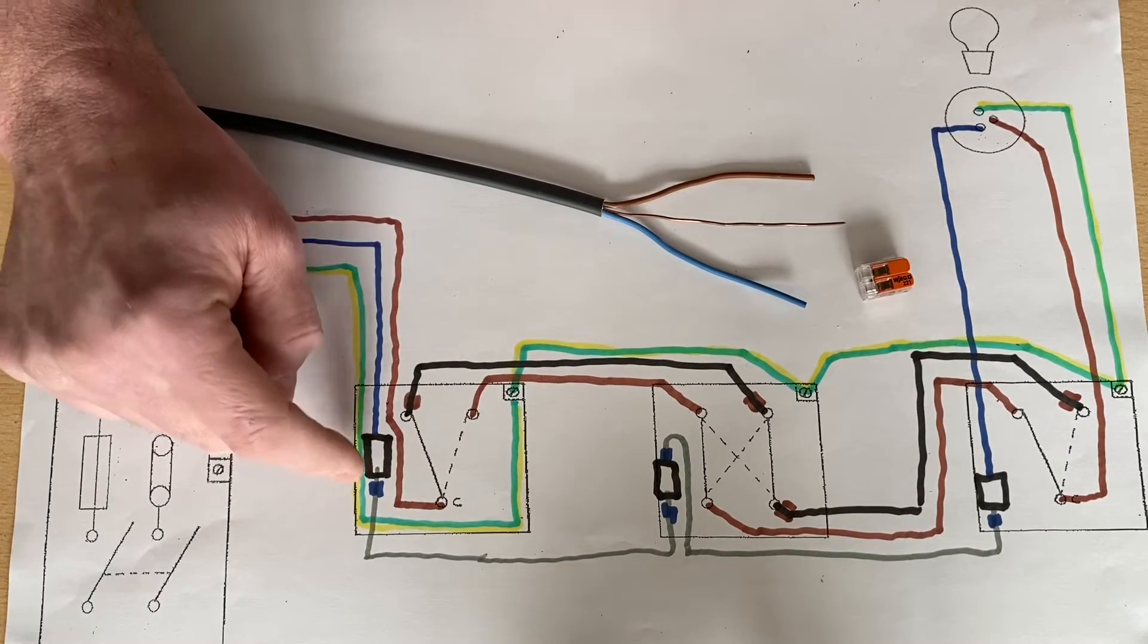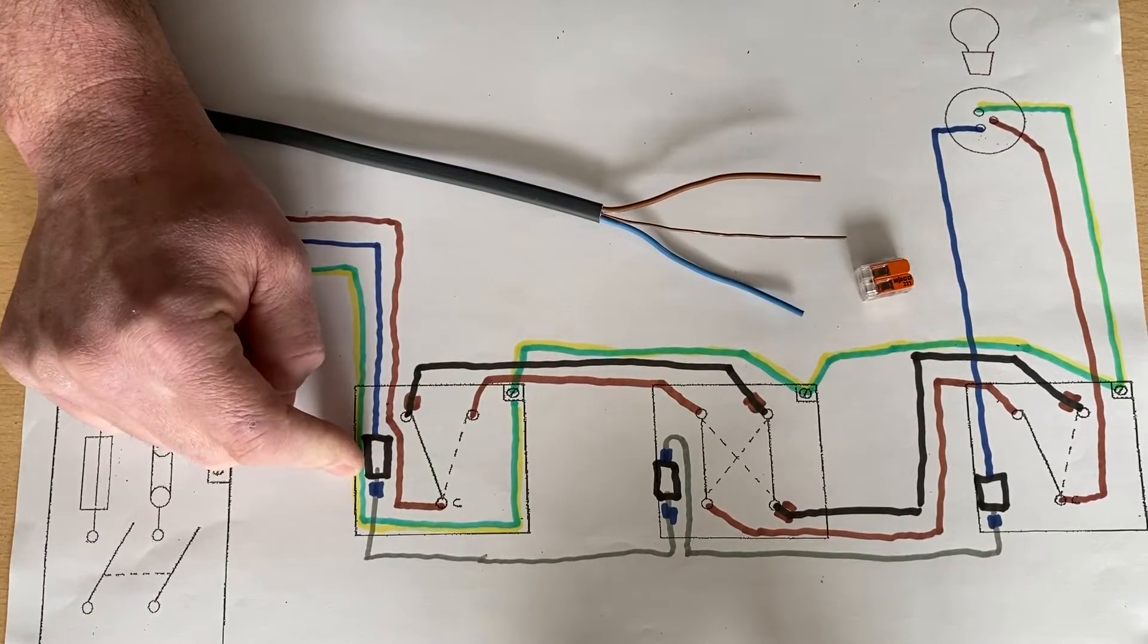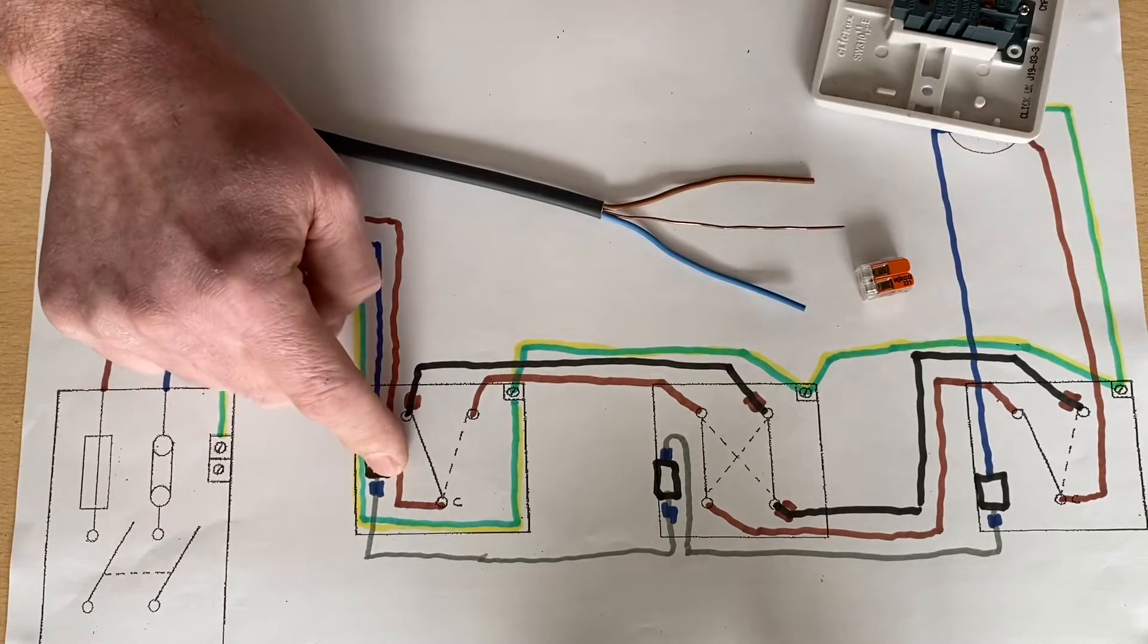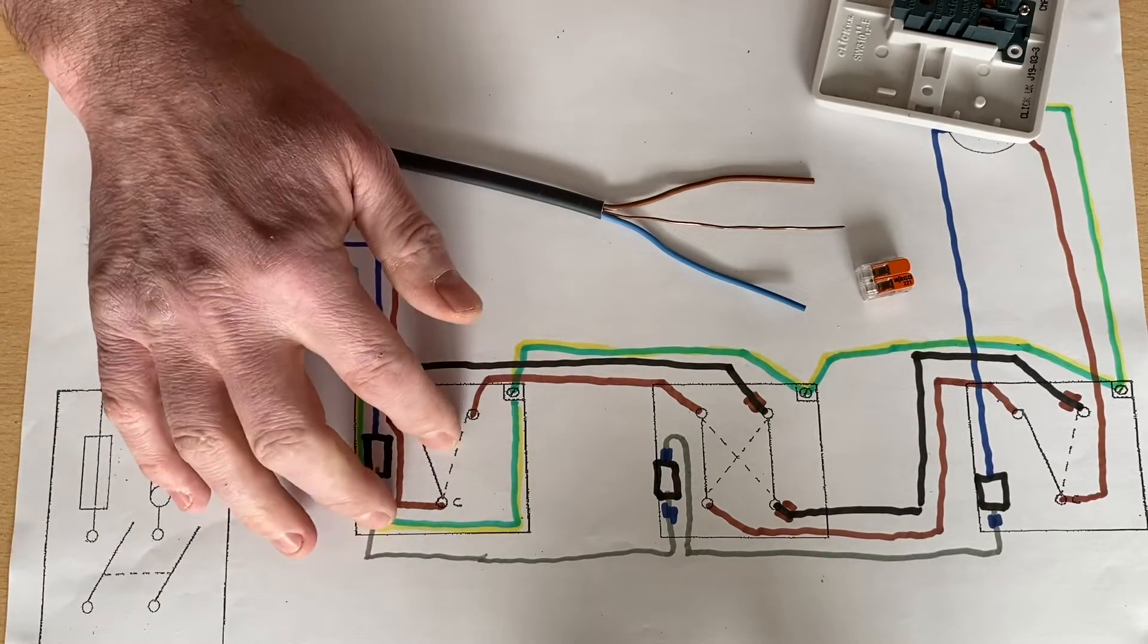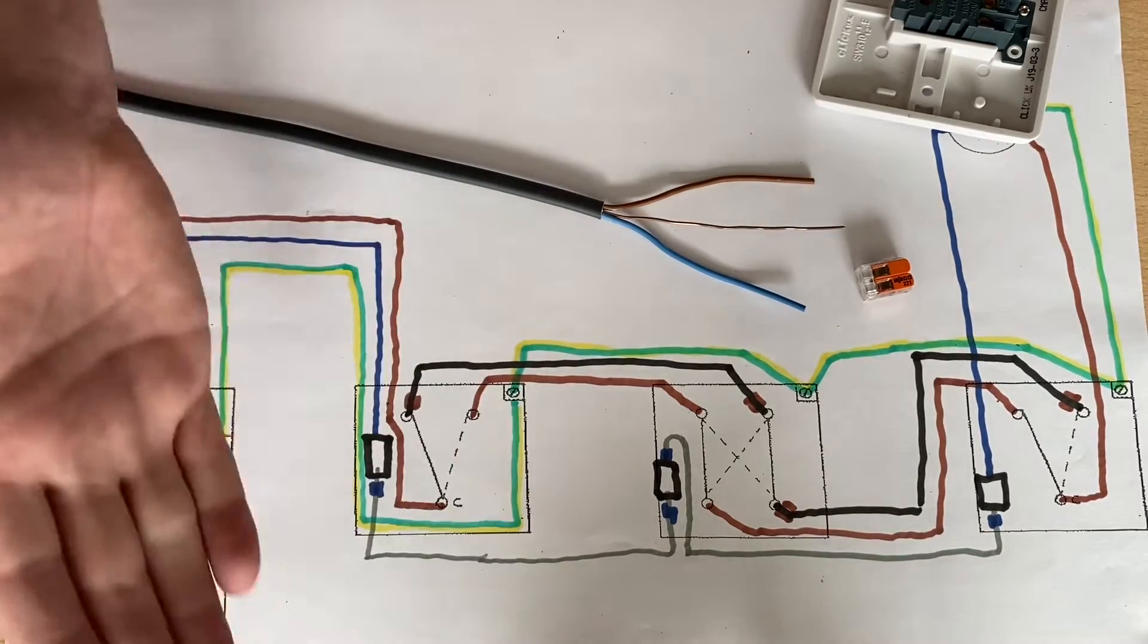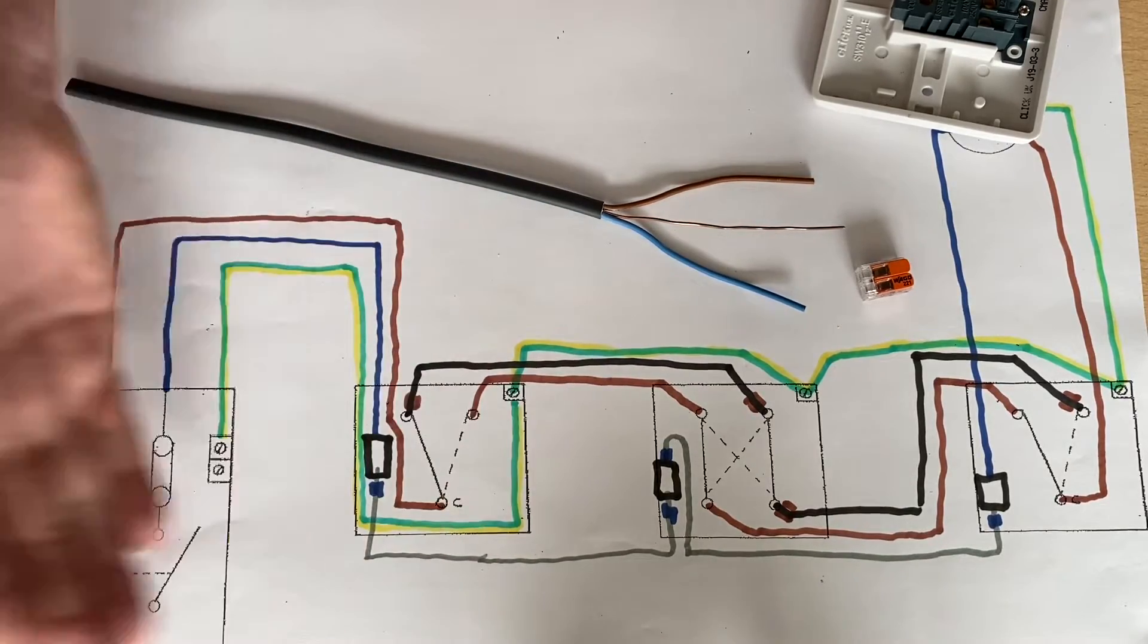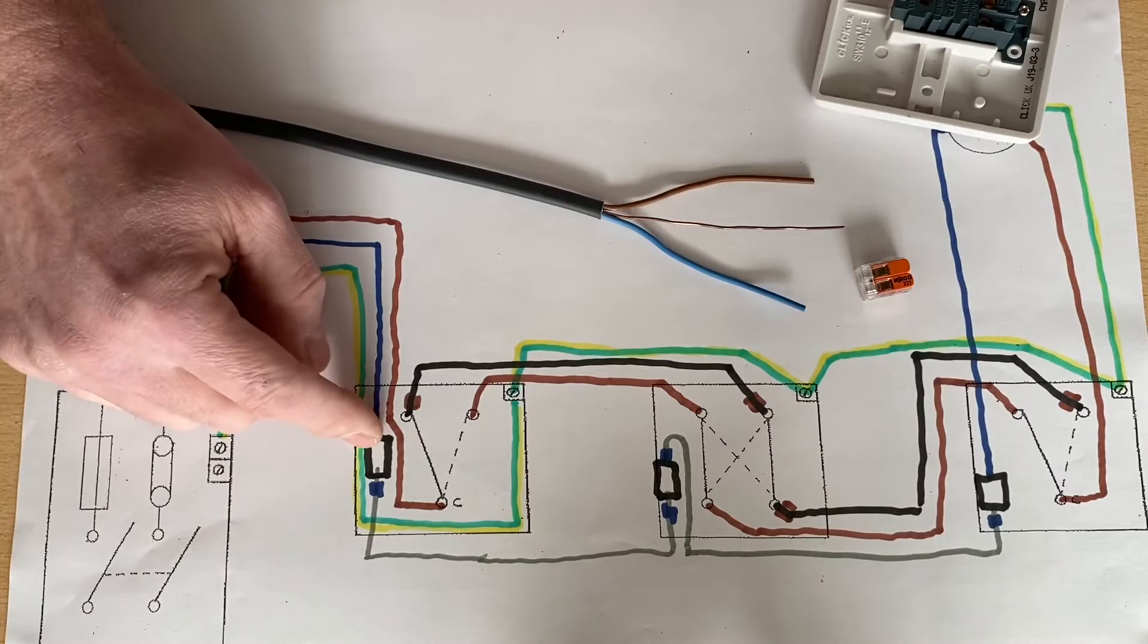This two-way switch here is the one that we can use to go into another area. So we can take our supply from here and go to another room. We could do the three plate method in there, we could do the two plate, or you could do the wired through the switch method that we've got here.